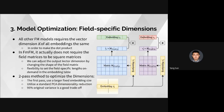In part three, we introduce field optimization methods. The first is field-specific dimensions. All other factorization machine models require all embedding vector dimensions k to be the same. But in FM-Square, the field matrix doesn't need to be square — we can adjust the output intermediate vector dimensions by changing the shape of the field matrix, giving us flexibility to set field-specific embedding lengths on demand.